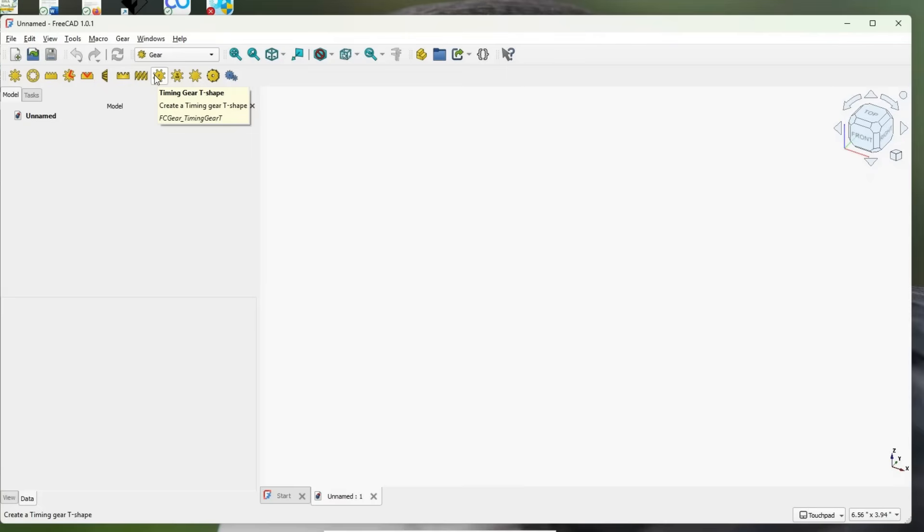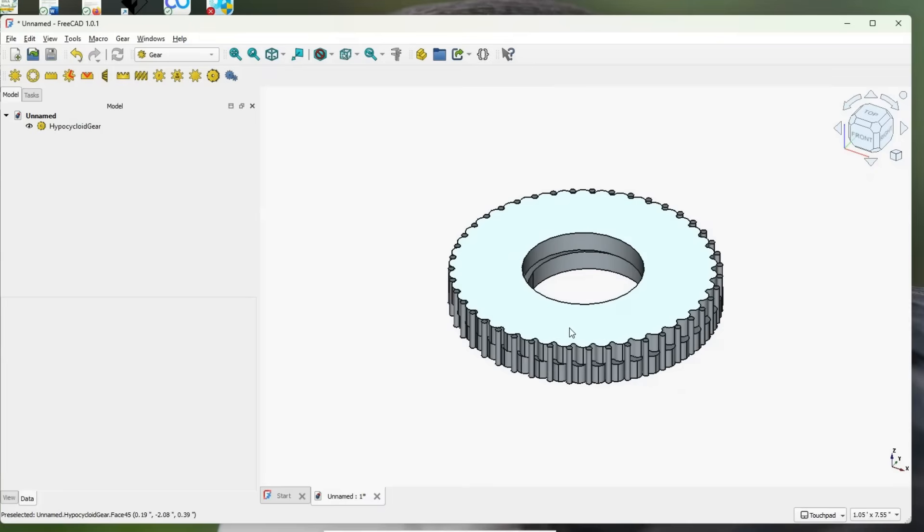Here we've got a lantern gear, here we've got a hypercycloid gear. Now they're an utter pain to design, you have to go right back to the mathematics but here all you have to do is click it. Once you click it it will create the cycloid gear for you.